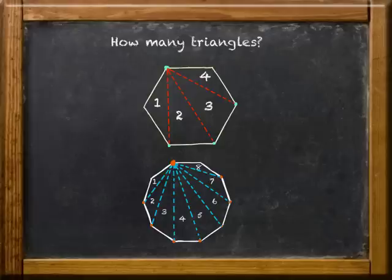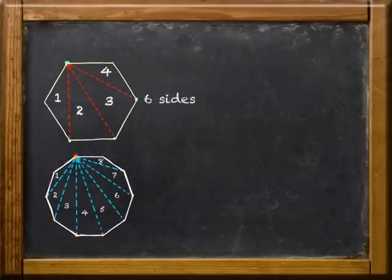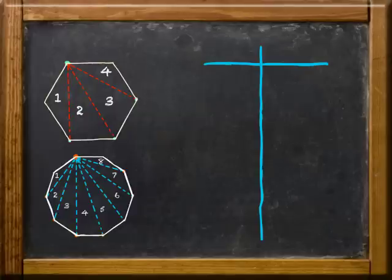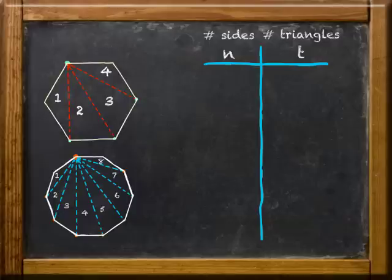Now, maybe you saw the start of a pattern there. Six sides, four triangles. Ten sides, eight triangles. So, let's put that into a table. We'll put the number of sides on the left, and the number of triangles on the right.